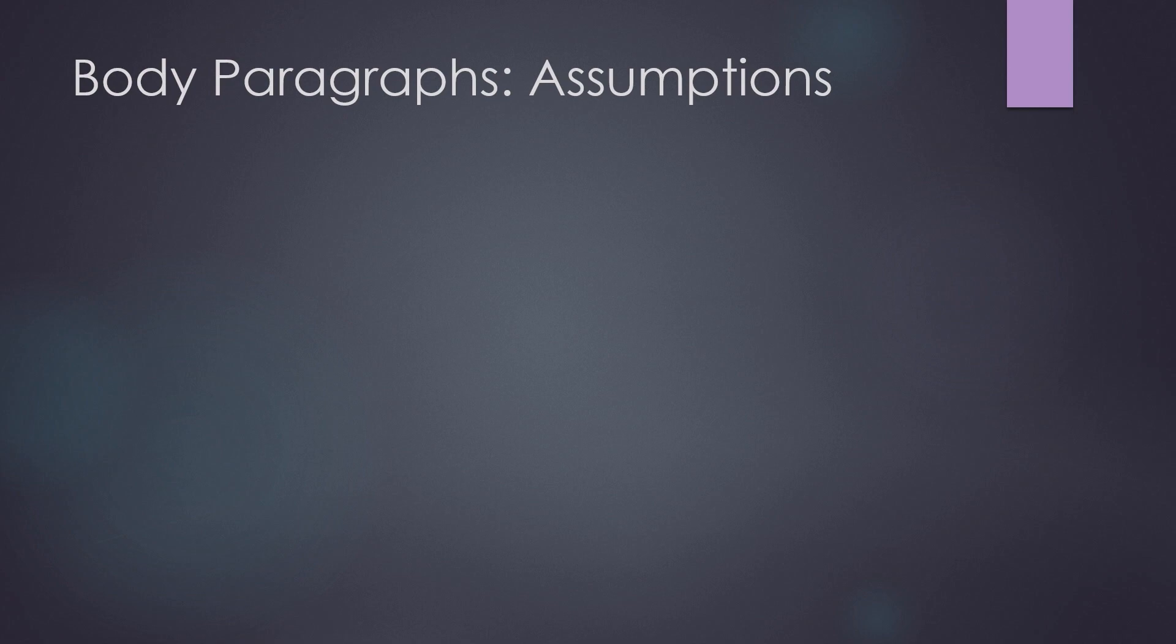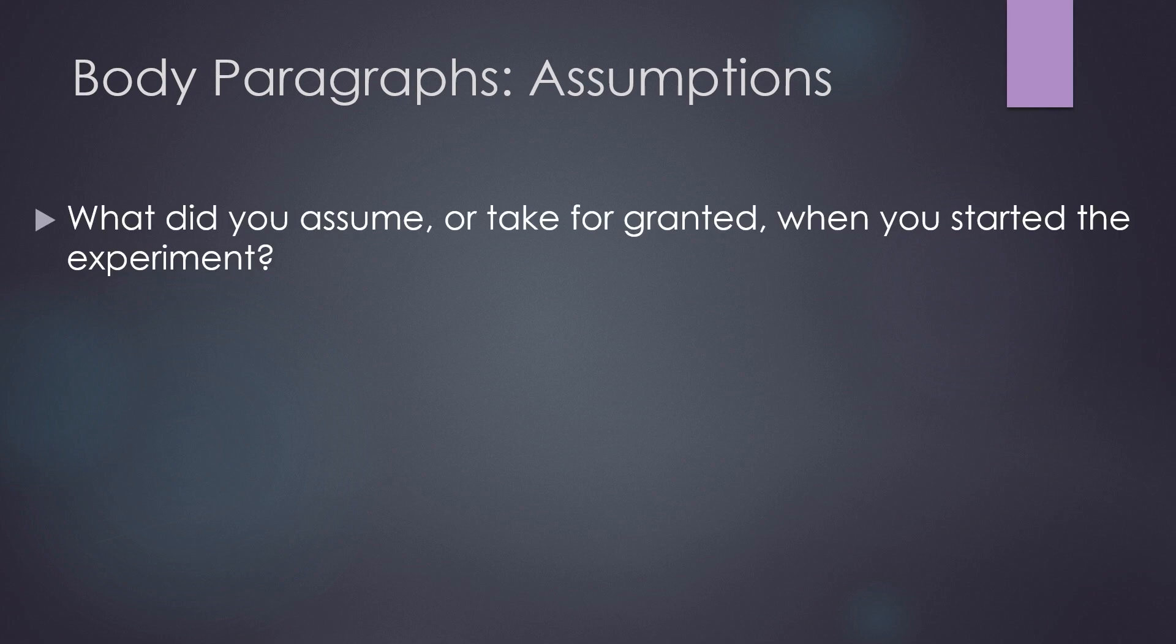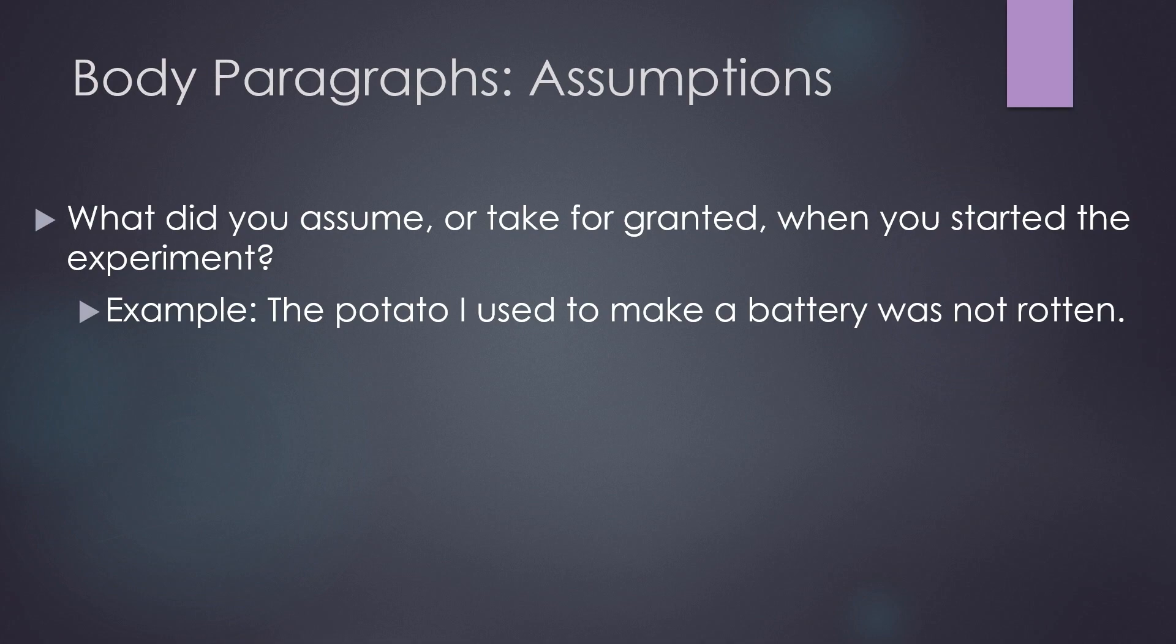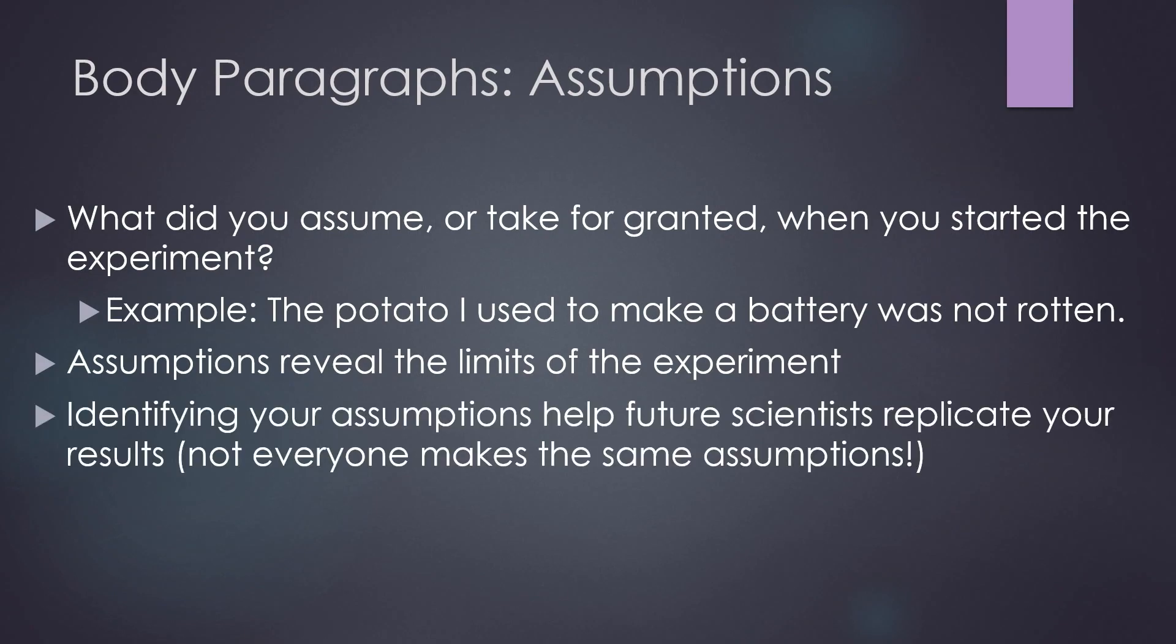You may also include a body paragraph on the assumptions that you made during the experiment. What did you assume or take for granted? For example, I might assume that the potato I used to make the battery was not rotten on the inside where I couldn't see it when I began my experiment. Listing the assumptions you made can reveal the limits of an experiment. For example, a potato probably conducts electricity differently if it is rotten than if it is freshly harvested. You can look to the assumptions question in your lab guide to get your ideas flowing.